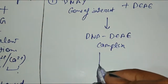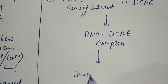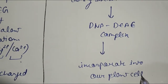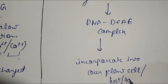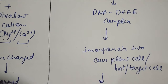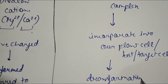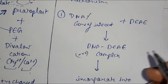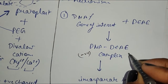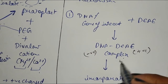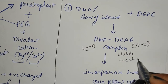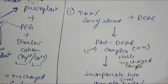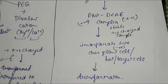After the complex is generated, it is then incorporated into the plant cell, or into the host, or into the target cell, and after this, transformation is completed. The complex forms because DEAE is positively charged, so it generates a stable positively charged complex with the DNA. Since the plant cell is negatively charged, the positive-negative binding enables transformation to occur.